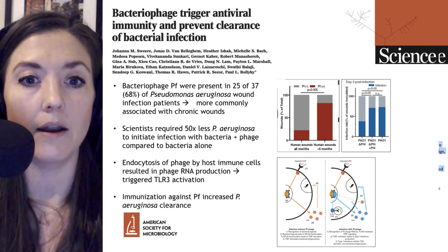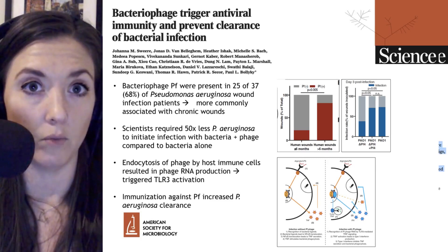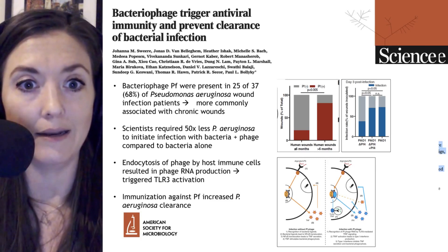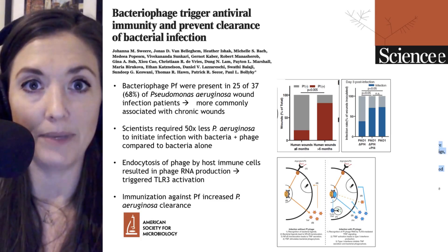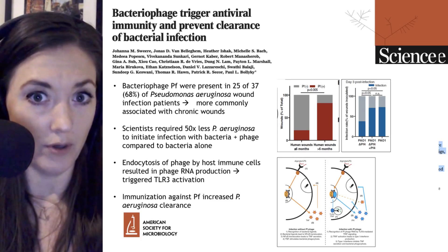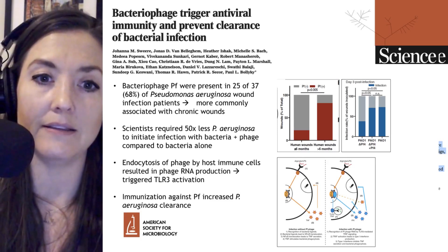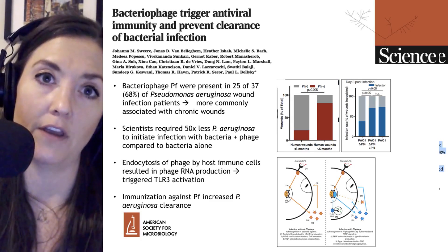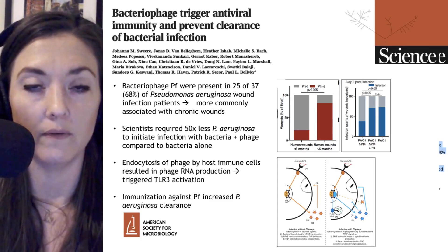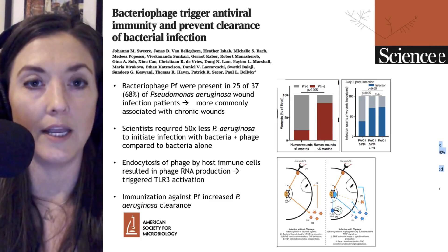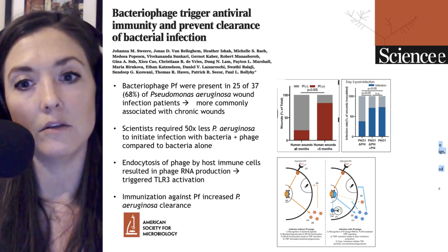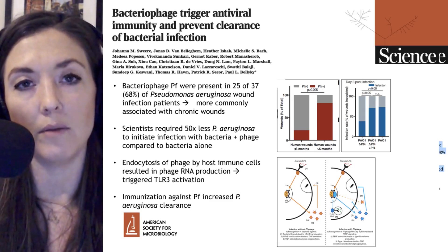They noted that two-thirds of these wounds were infected with a Pseudomonas strain that contained the bacteriophage PF, and, importantly, these bacteriophage associations were more commonly associated with chronic wounds — wounds that were taking a long time to heal, lasting more than six months — as you can see in the red graph on the right-hand side.